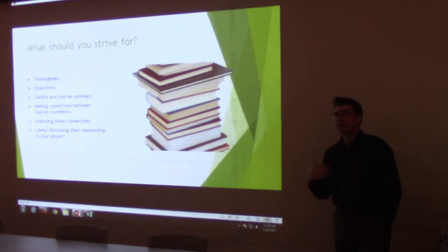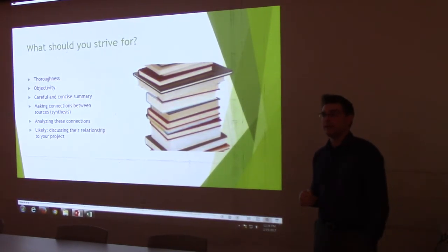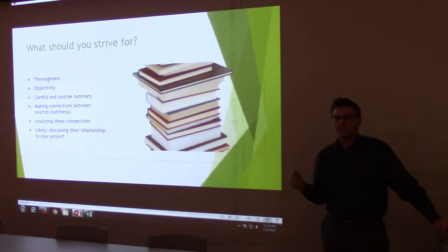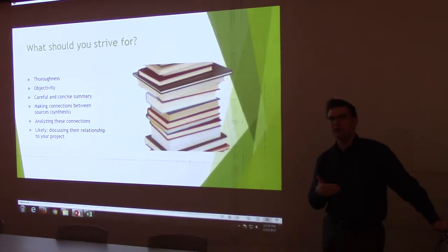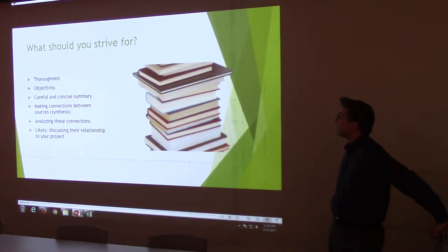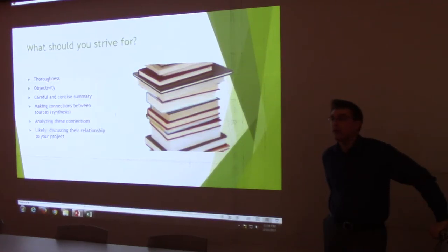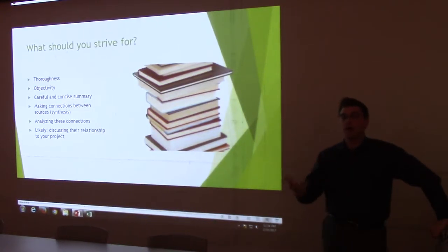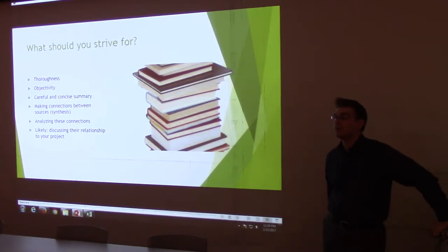Objectivity: lit reviews, like annotated bibliographies, aren't a place for you to make a lot of opinionated statements. You want to be fair to the authors that you're researching — almost a colder, more distant tone to your writing — because you want to accurately summarize and evaluate their contribution to the field. Careful and concise summary, similar to the annotated bibliographies: you want to very clearly get across what the authors you've studied are saying. That's probably the most important thing you can possibly do.